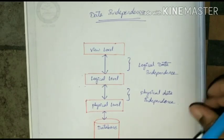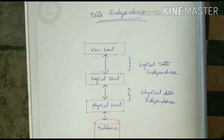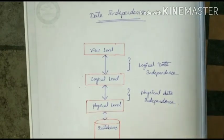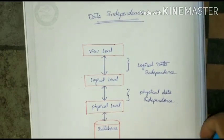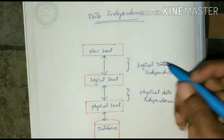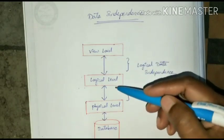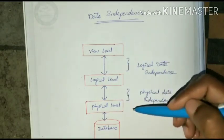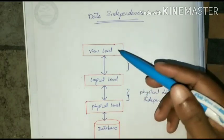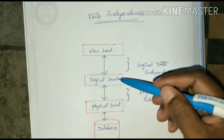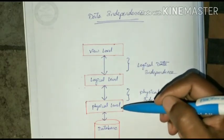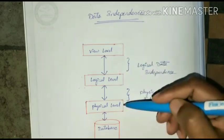Now coming to data independence. Data independence is the concept where data is independent between the various levels. There are three different levels: view level is separate, logical level is separate, and physical level is separate.